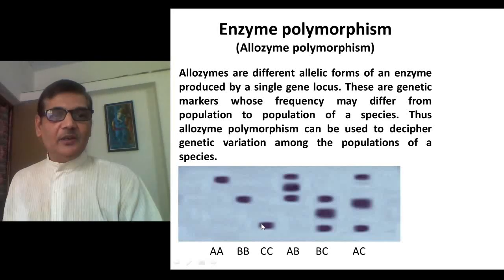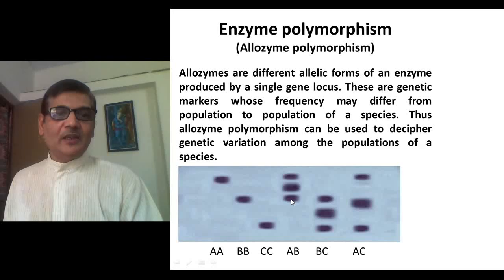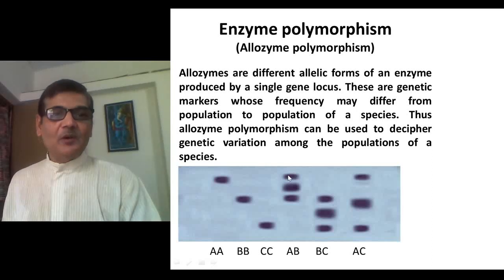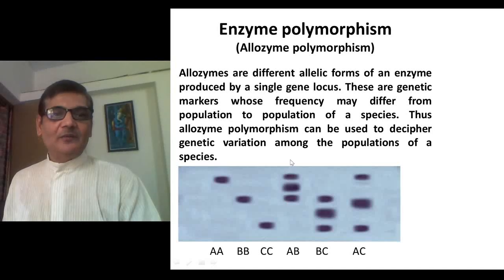In the third lane, you can see three bands: one is similar to A, another is for B, and there is an intermediate one. This happens only when the protein is dimeric — when two polypeptides unite to make a functional protein. Since it is a dimeric protein, the individual is actually heterozygous with genotype AB. The proteins or enzymes formed will be A as well as B type. AA may combine with each other, BB may combine with each other, and AB may also combine, being dimeric in nature, so you get three bands. This indicates that the individual loaded in this lane is actually heterozygous.